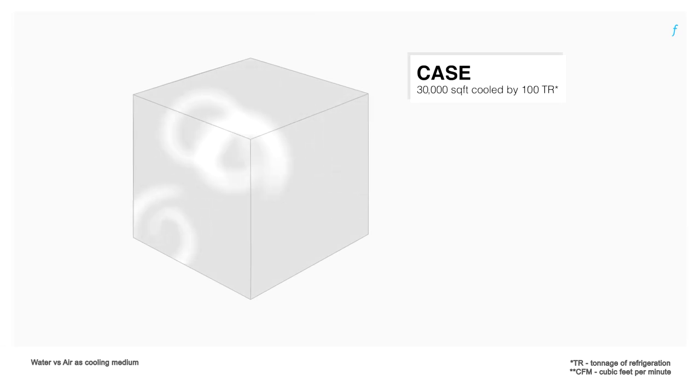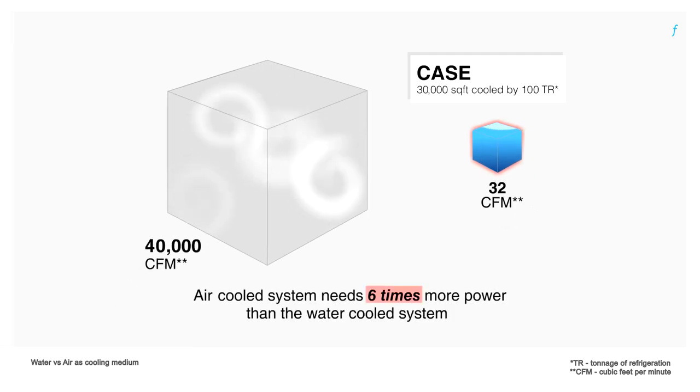Sample this: to provide 100 TR or tons of refrigeration worth of cooling, one would need 40,000 CFM of air compared to just 32 CFM of water. Moreover, the air cool system would need 6 times more power than the water cool system for just pumping.